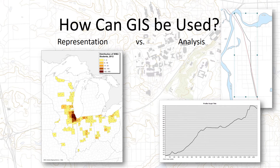Most of the projects I work on with the mapping service can be grouped into two broad categories — one I like to call representation and the other analysis. An example of a representational map would be something where a client comes to me with data already in hand and they want me to simply map the data to show what they wanted to show. For example, on the left here we have a straightforward map that shows the distribution of WMU students' residence outside of the state of Michigan in 2012.